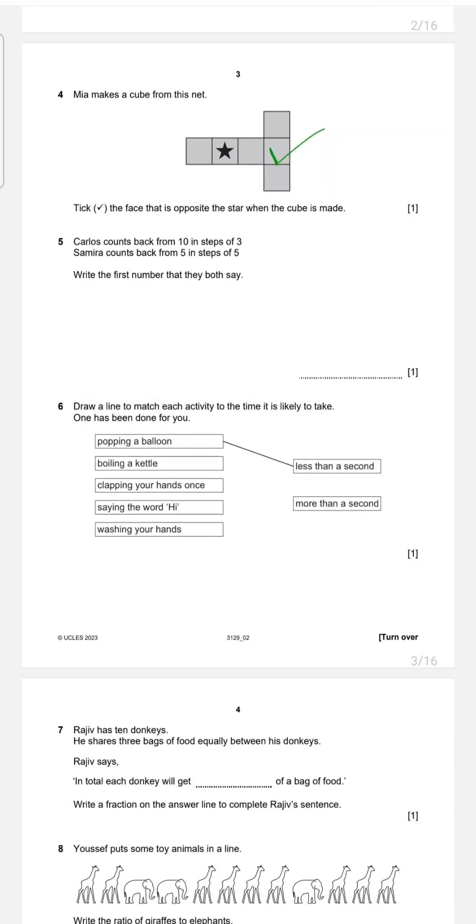Question 5. Carlos counts back from 10 in steps of 3. Samira counts back from 5 in steps of 5. Write the first number that they both say. As you know, what is count back? Count back is the operation of subtraction. You start from big number and you go to the small number, so your series decreases. Let's write Carlos numbers. Carlos starts 10 and count back 3 by 3. So 10 minus 3 is 7. So next number will be 7. After 7, again, subtract 3 is 4. Again, subtract 3 is 1. And subtract 3 is negative 2. Subtract 3, negative 2 subtract 3 is negative 5. This is the numbers of Carlos.